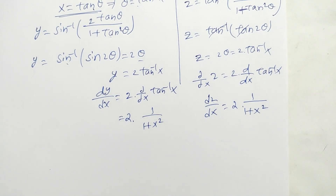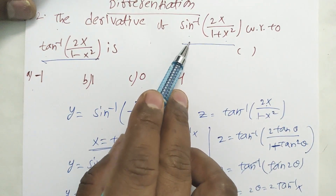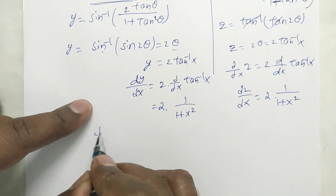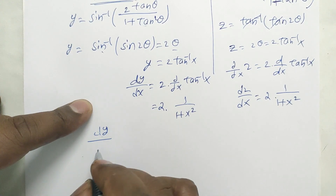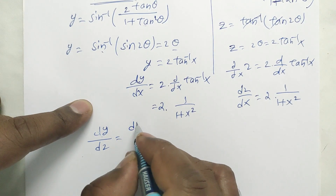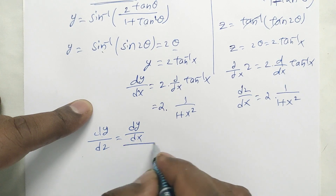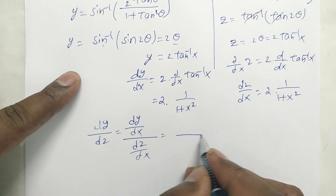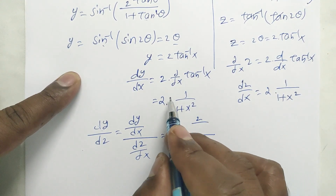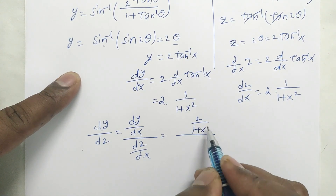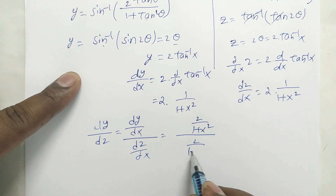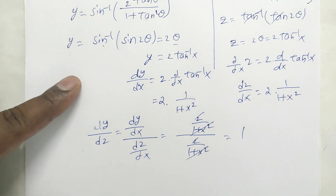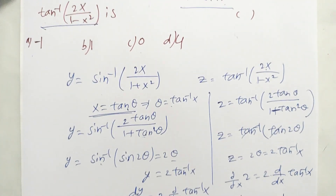The derivative of sin⁻¹(2x/(1+x²)) with respect to tan⁻¹(2x/(1-x²)) is dy/dz = (dy/dx)/(dz/dx) = [2/(1+x²)] / [2/(1+x²)] = 1. The answer is option b, which is 1.